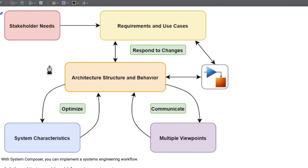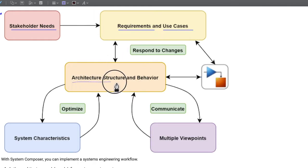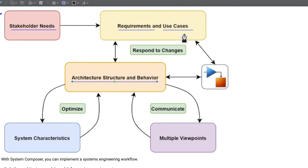We usually start from the stakeholder needs or requirements. From those we derive requirements and also consider use cases — how the system is supposed to be used and the different operating scenarios. From that we start designing our architecture structure and behavior. Once we design our architecture, we go back to look at the requirements and use cases according to the architecture, and try to restructure them so they are more compatible with our present architecture. Then we come back to restructure and adjust behavior — this goes back and forth continuously.